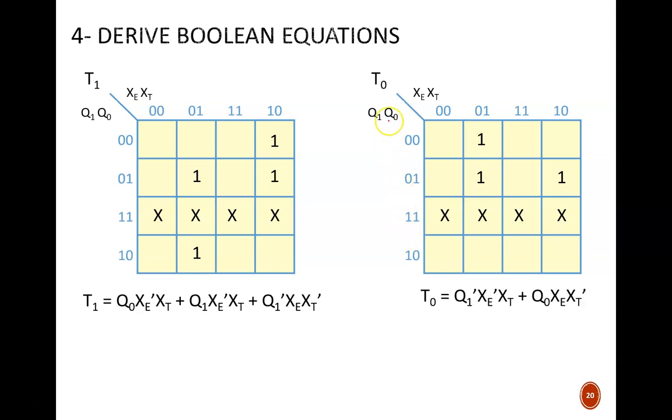But wait, didn't I say there should be seven don't care conditions? Yes, this is an intentional mistake in the slides. Well, mistake is too strong of a word. My equations are still correct, but are overly specific. They could be simplified further. I should have also placed x's in the 1-1 column because of my assumption that timer and emergency signal will not occur simultaneously.